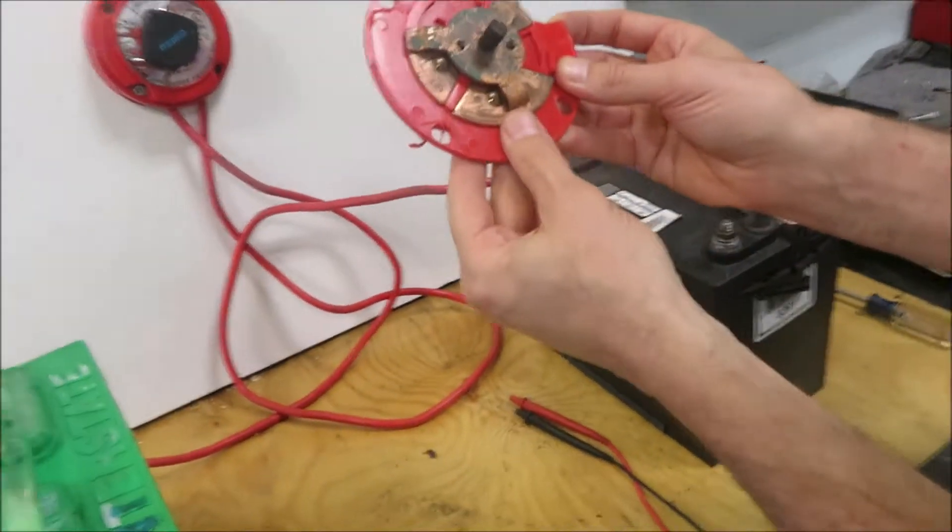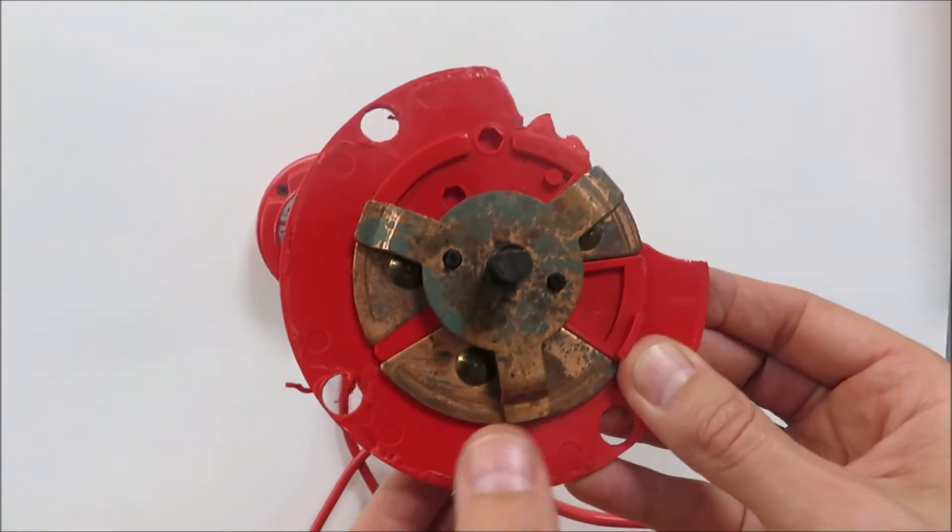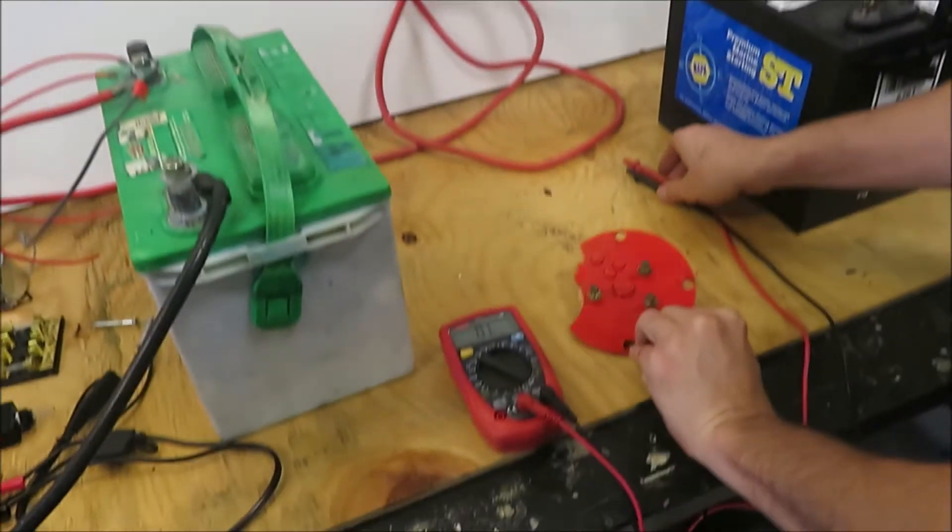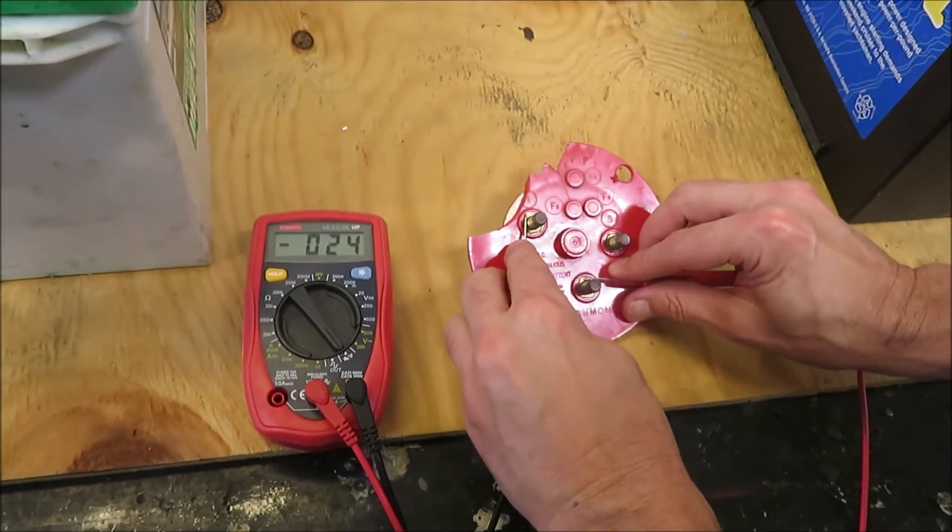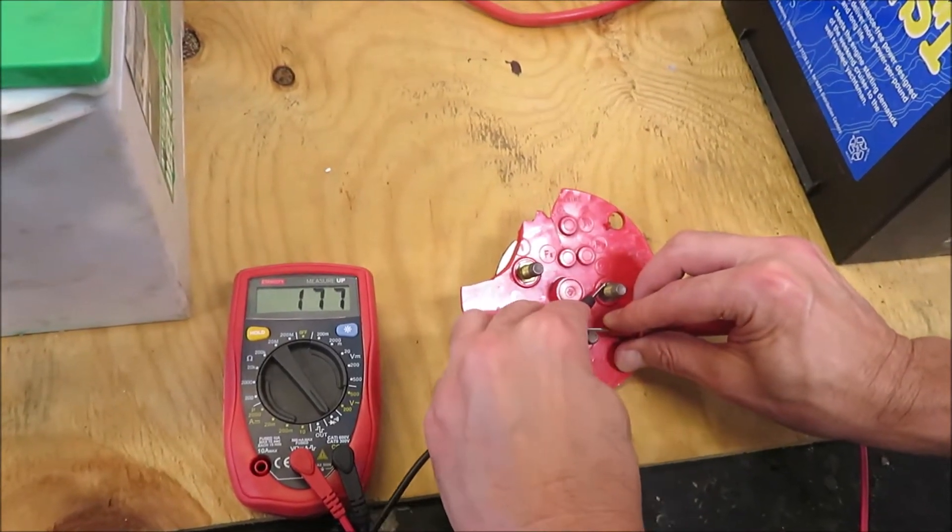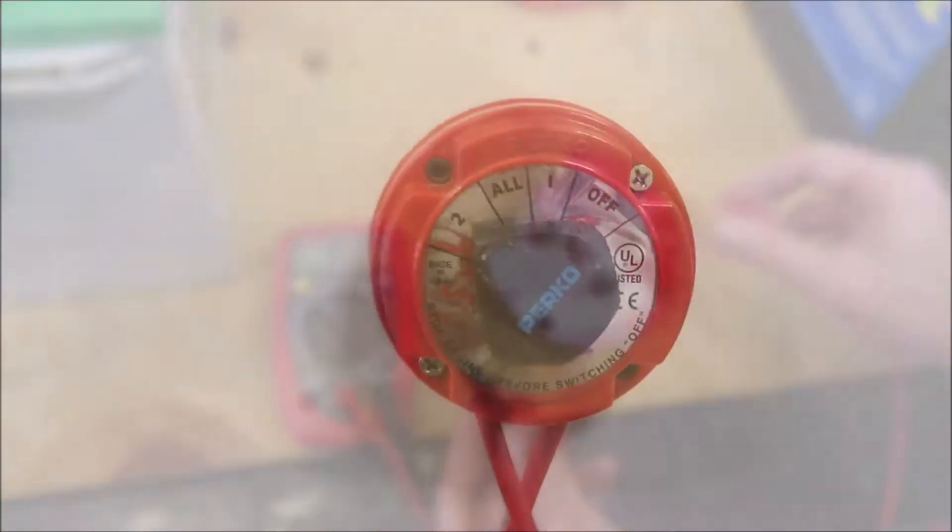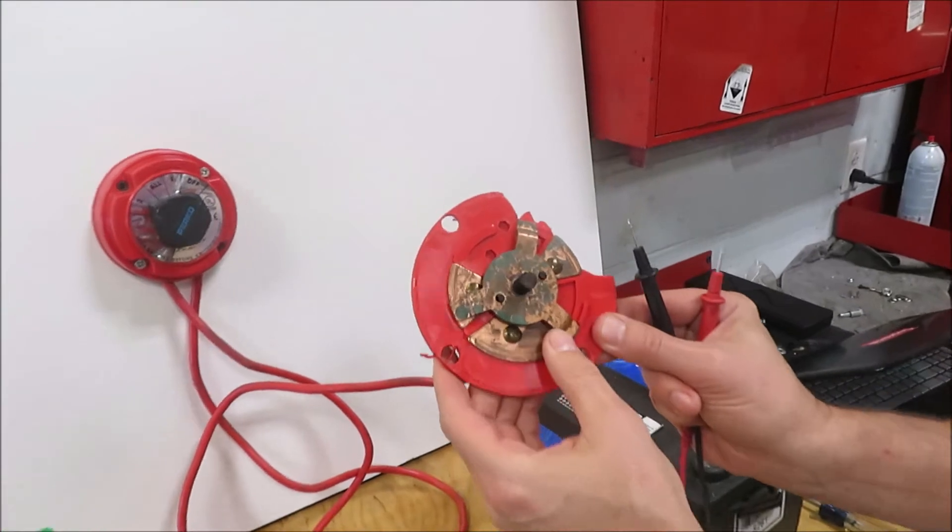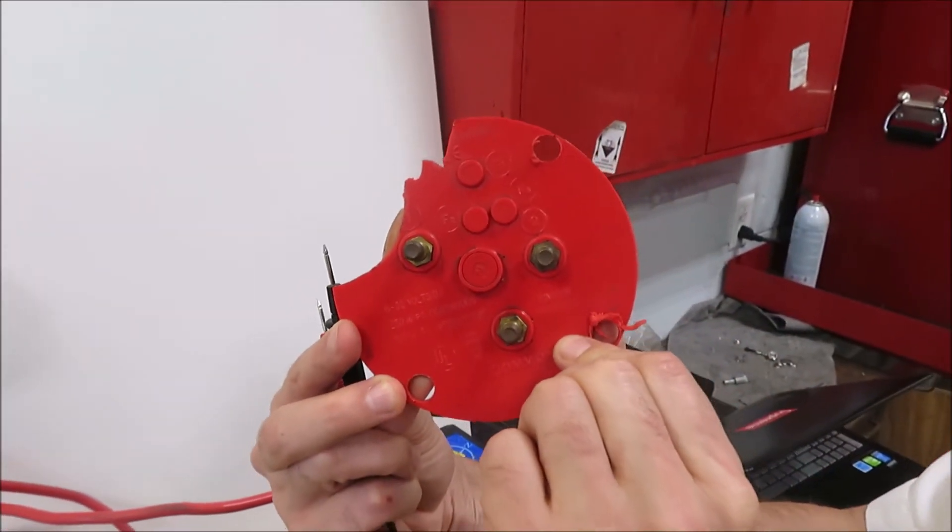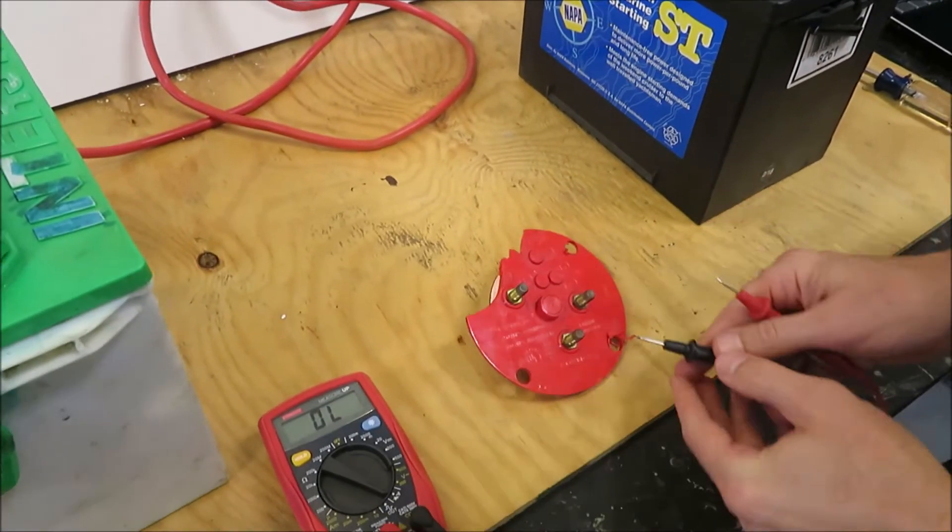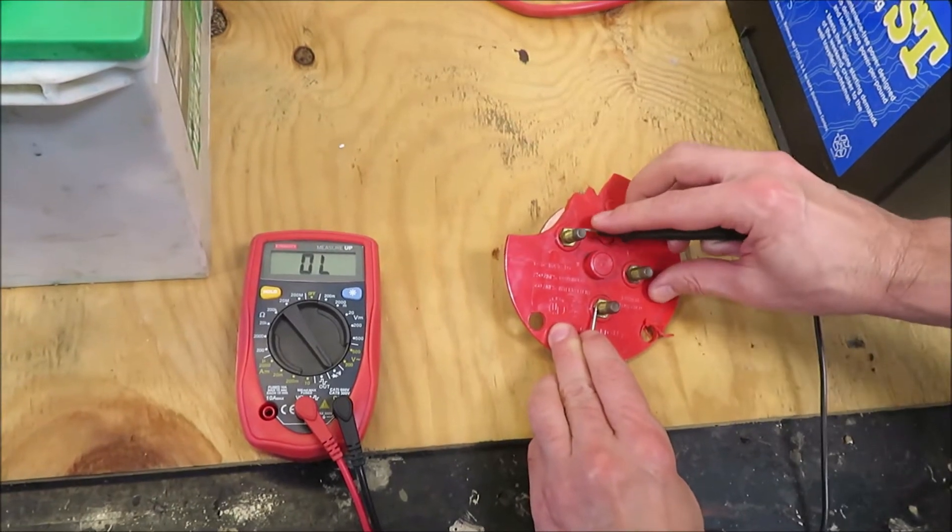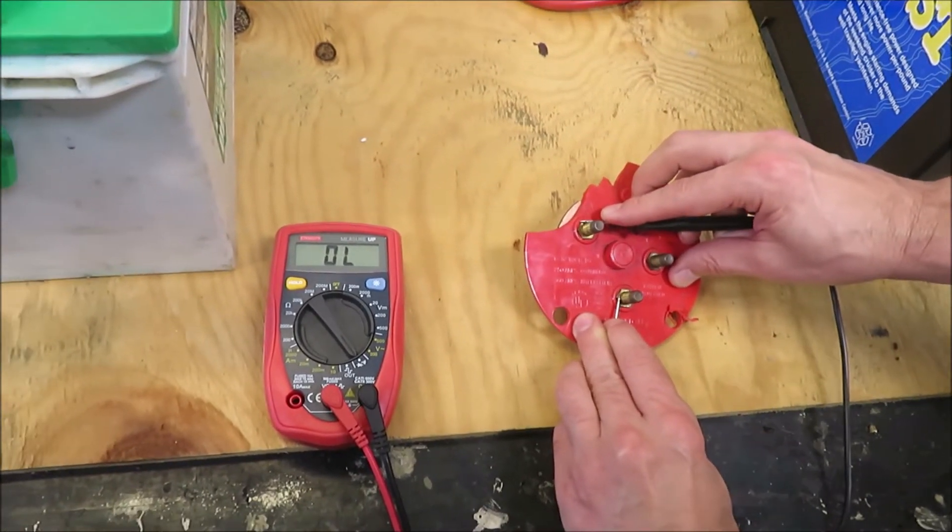Now we'll switch it to all. And you can see you're making contact with the common and both battery terminals. And to test it, terminal one, terminal two. Spinning it all the way around, making contact with the common and number two. Good connection. No connection meaning battery one is shut off.